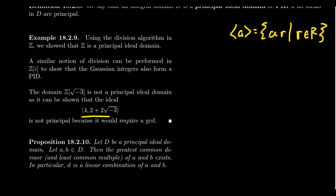So that's why it wasn't a unique factorization domain. This foreshadows what we'll see at the end of this lecture: every principal ideal domain is actually a unique factorization domain. Among other things, the principal ideal property would enforce the existence of a GCD. So if you don't have GCDs, you can't be a principal ideal domain.